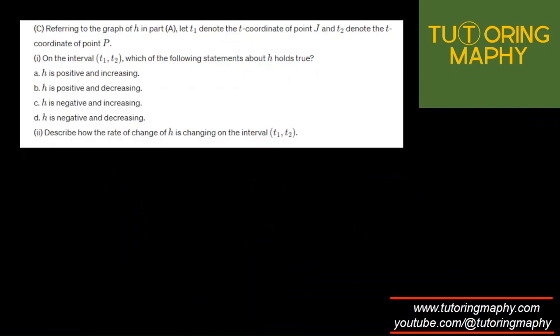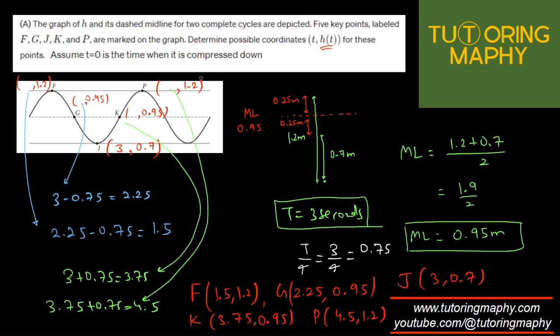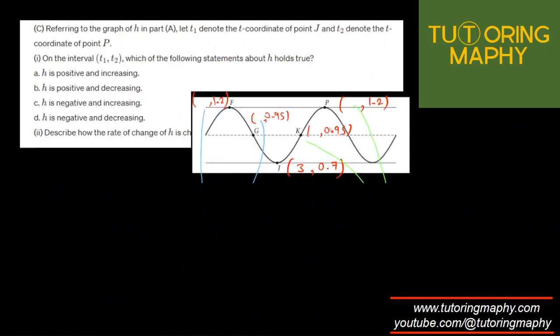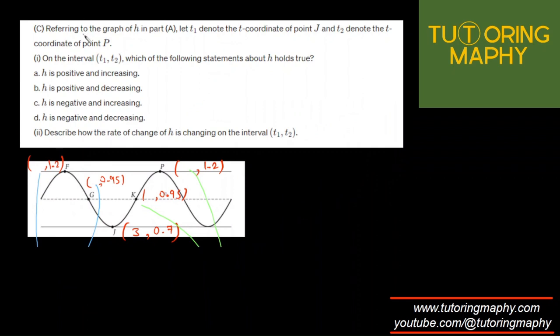In the next question, referring to the graph of H, let T1 denote the t-coordinate of point J and T2 denote the t-coordinate of point P. Let me pull this graph up so we can have everything in a single view. They're talking about J over here, and P over here. So in this interval, where J is T1 and P is T2, they're asking which of the following holds true.